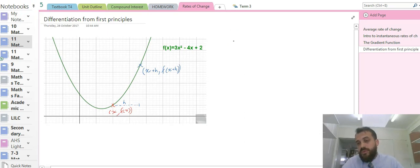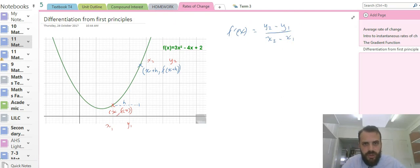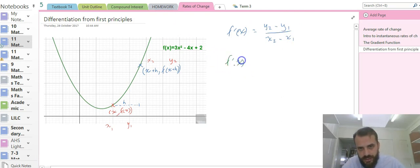Now the reason I've done that is because I want to find the gradient function. So the gradient function is f'(x), and the gradient between these two points is going to be (y₂ - y₁)/(x₂ - x₁). Now I'm going to add a little bit in there in a minute, but this is just so you get a feel for where we're at. So that means that f'(x) equals, I'm just going to leave a space here because I'm going to add something in there in a minute.